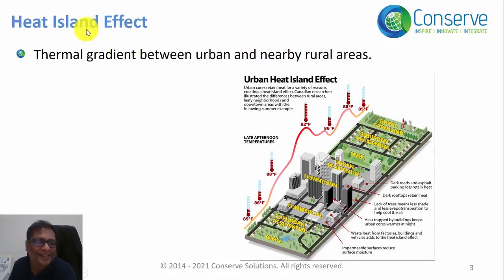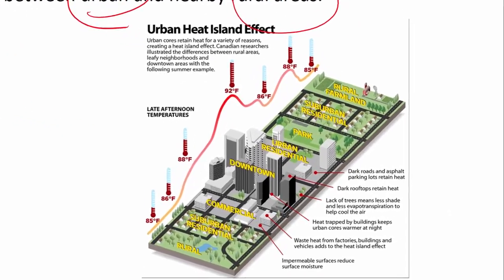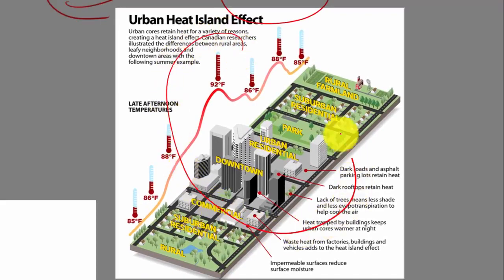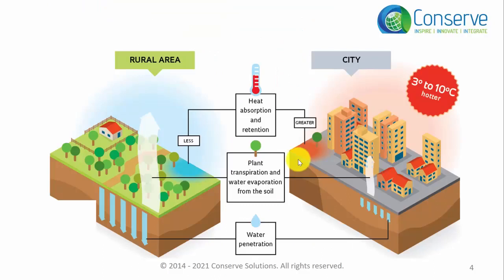Heat island effect is basically the temperature difference, or thermal gradient, between urban areas and nearby rural areas. This picture clearly illustrates heat island effect — urban areas such as cities record around 92 degrees Fahrenheit, whereas nearby rural areas record 85 degrees Fahrenheit. Research shows that cities can be 3 to 10 degrees hotter than nearby rural areas.